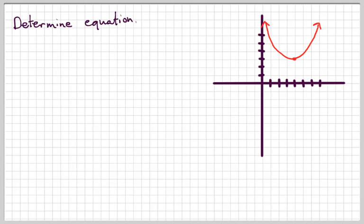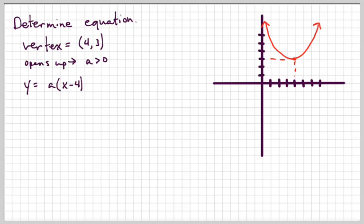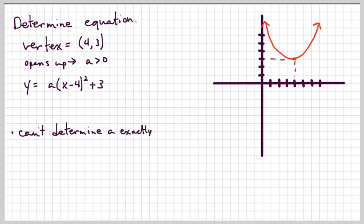Now we're going to see if we can determine the equation just by looking at a graph. We can figure out H and K, but we cannot determine A exactly — except we can see its sign. Here the parabola opens up, so A should be positive. The vertex looks like 4 comma 3, so H is 4 and K is 3. Even though we can't specify A exactly, for a multiple choice problem you just need the sign of A and the correct vertex.